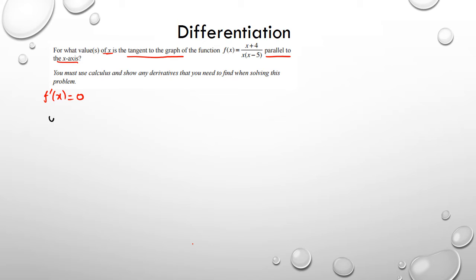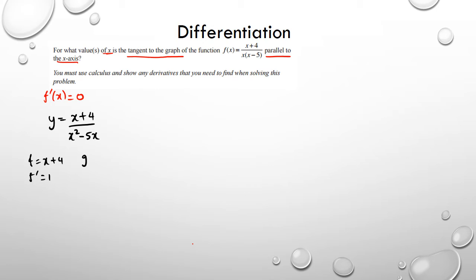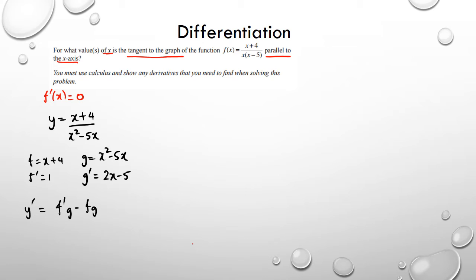I've got f(x) — I'll write it as y — with x plus 4 in the numerator and expanding the denominator gives x squared minus 5x. Using the quotient rule: f equals x plus 4, f' equals 1, g equals x squared minus 5x, and g' is going to be 2x minus 5.